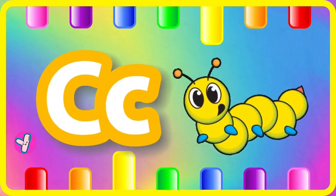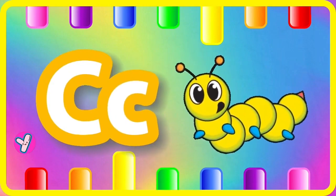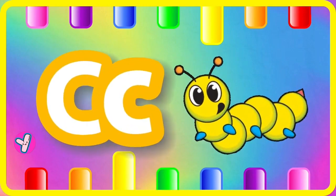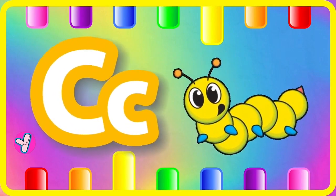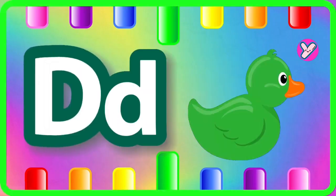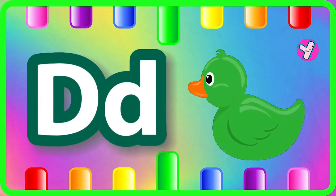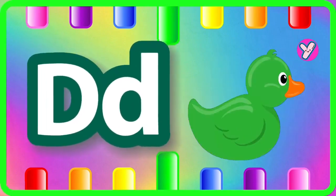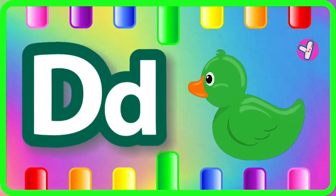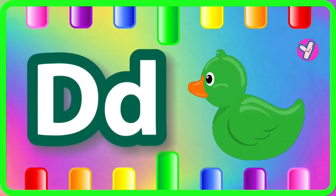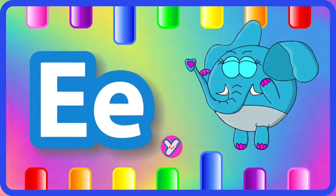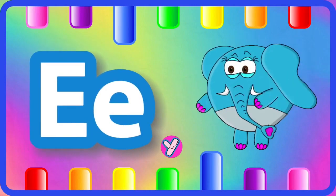C is for caterpillar, caterpillar. D is for dog. E is for elephant, elephant.